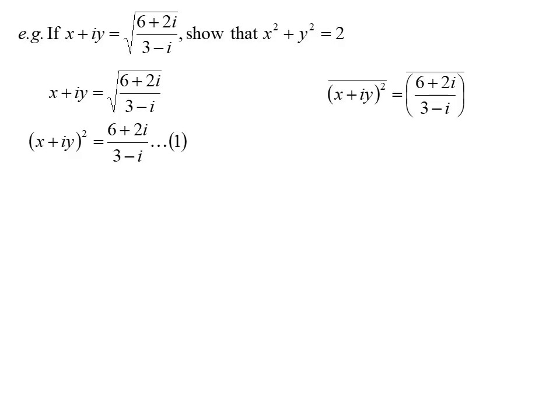Or I could play with conjugates. The conjugate of the left-hand side must equal the conjugate of the right-hand side. They're equal things. But when I do division, I could take the conjugate of the top and divide it by the conjugate of the bottom. Now I have this expression, X minus IY squared is 6 minus 2I over 3 plus I.